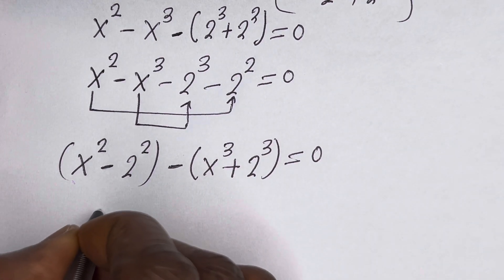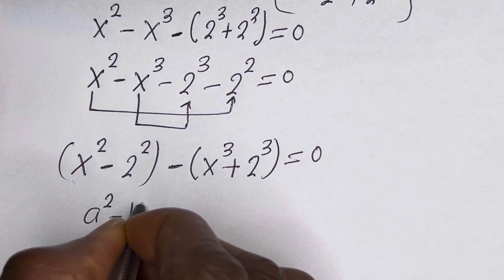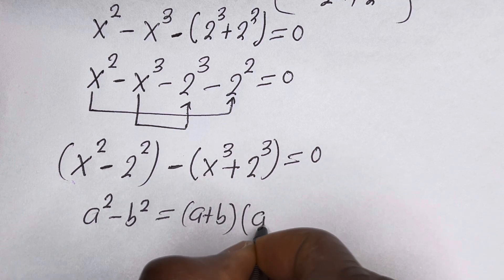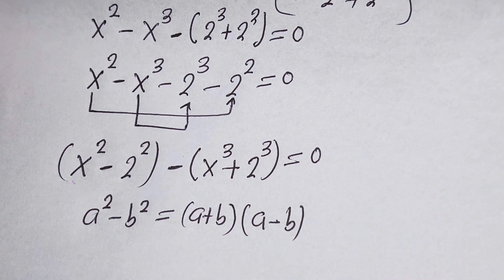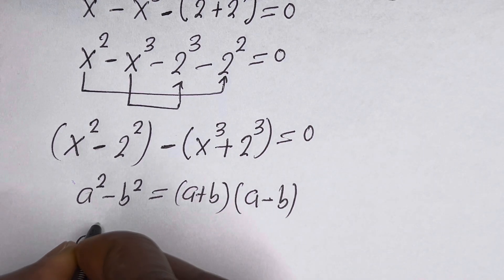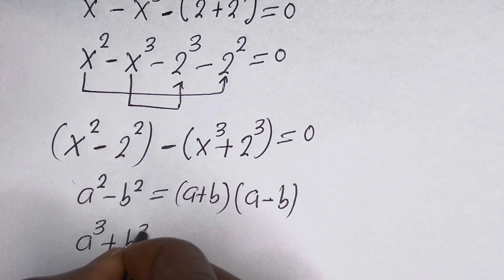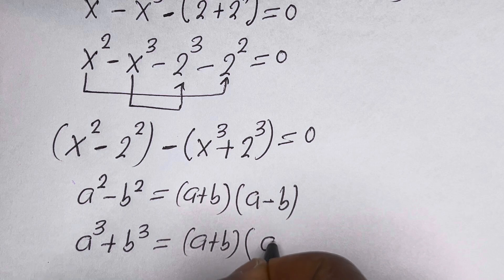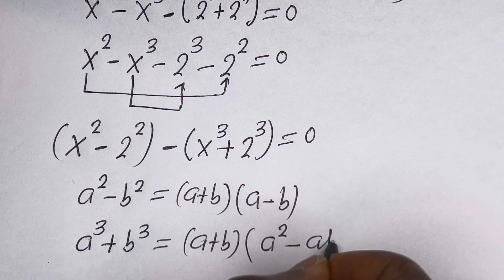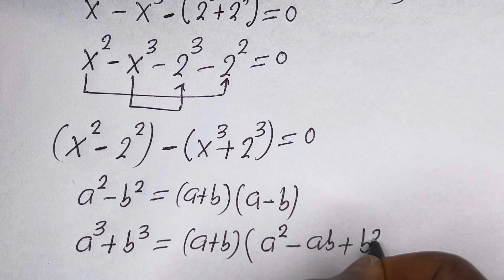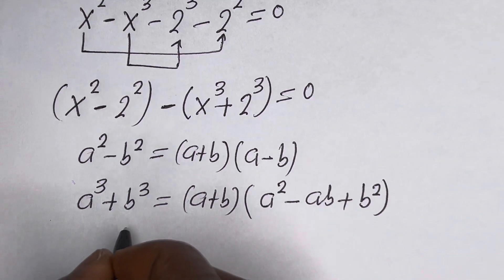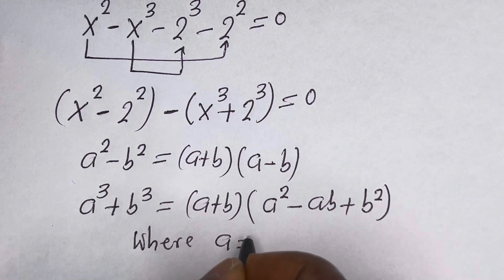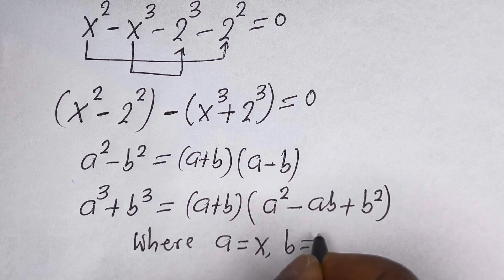Take note that if you have a squared minus b squared, this is equal to a plus b bracket a minus b. And if you have a raised to power 3 plus b raised to power 3, this is equal to a plus b bracket a squared minus ab plus b squared. In this case, a is equal to s and b is equal to 2.